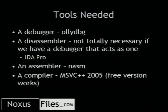The tools needed to do this: basically you need a debugger — OllyDBG is my choice, though many people prefer WinDBG. A disassembler is not totally necessary if you have a debugger, but IDA Pro is a good choice. And an assembler — I prefer NASM, which is what the Metasploit payload development kit uses. You're also going to need a compiler. I chose Microsoft Visual Studio C++ 2005 — the Express version works and it's free. So you can go home, compile my code, and run it if it works on your system.